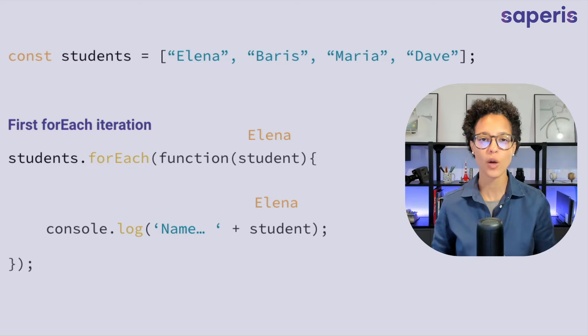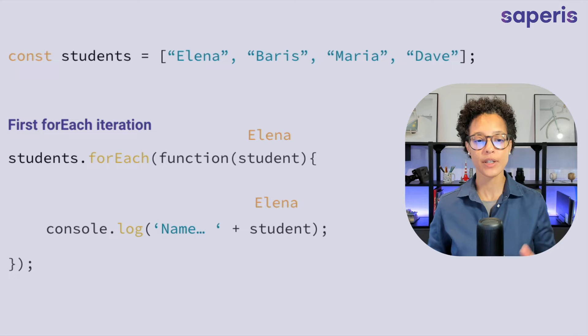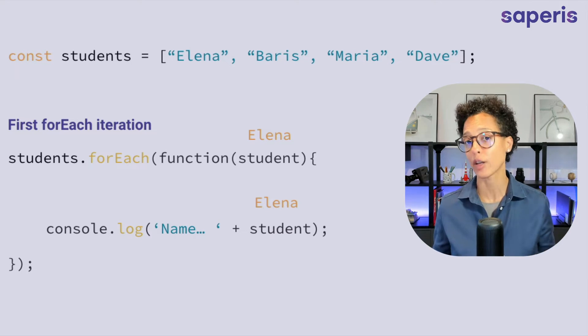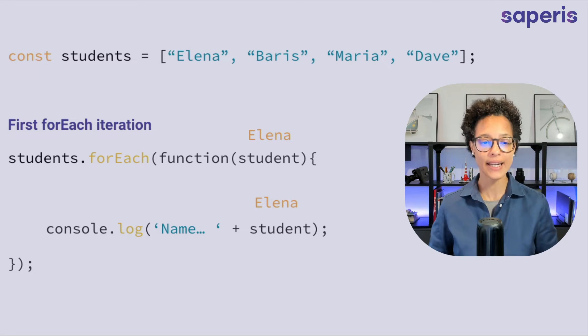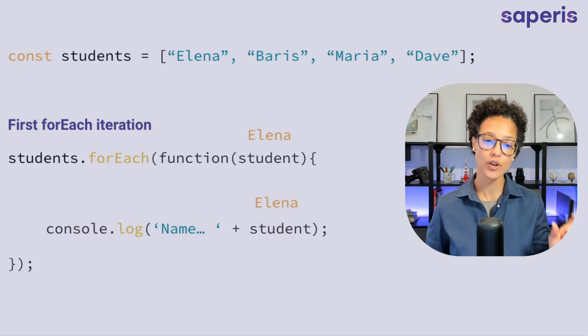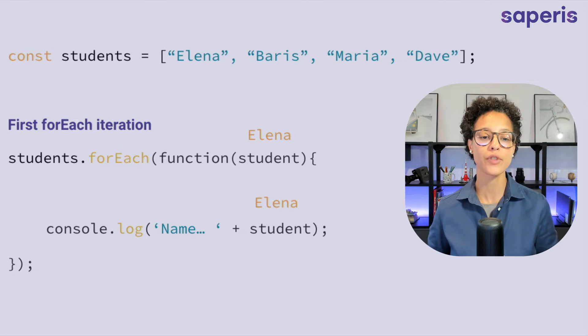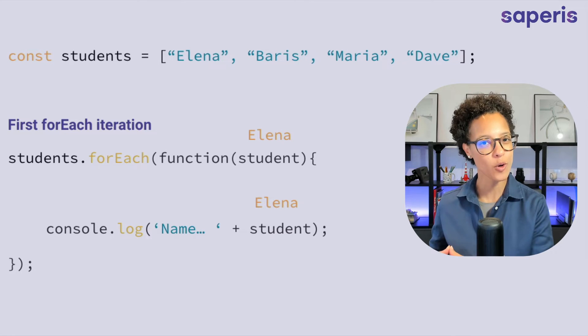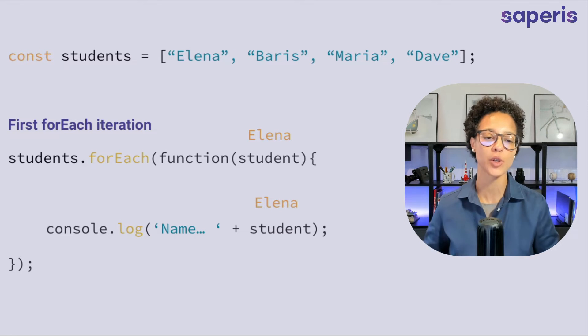Let's have a closer look at what actually happens on the first iterations. So we see that this function student that we're passing into the forEach method, this student stands for the current element of that iteration or of that loop if you want to call it that. So on our very first iteration obviously that's Elena and that's why when we're logging out to the console our string and the value of student that's going to be Elena on the first iteration. So I like to think of this student as kind of like the placeholder for whatever element is currently in the loop.